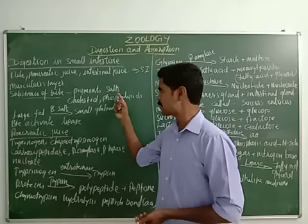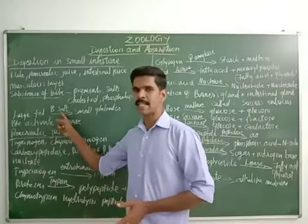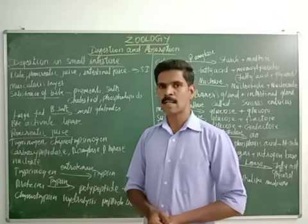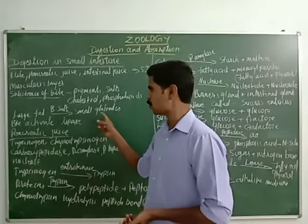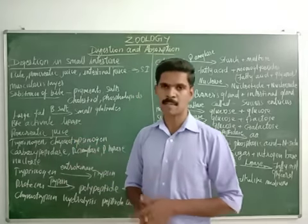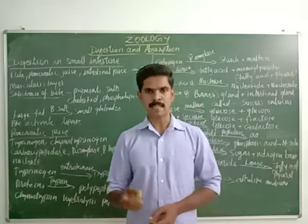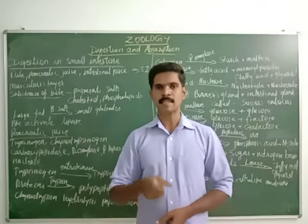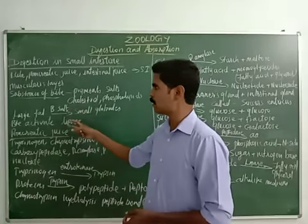So bile pigments, bile salts, cholesterol and phospholipids are the substances present in the bile. The function of bile salt: bile salt converts the large fat molecules into small fat globules. The large fat molecules present in the ingested food are broken down into small fat globules with the help of bile salt. The second function of bile is that bile activates the lipase enzyme. Lipase is activated by the bile, and this lipase is used to digest lipids. So now we have completed the bile.